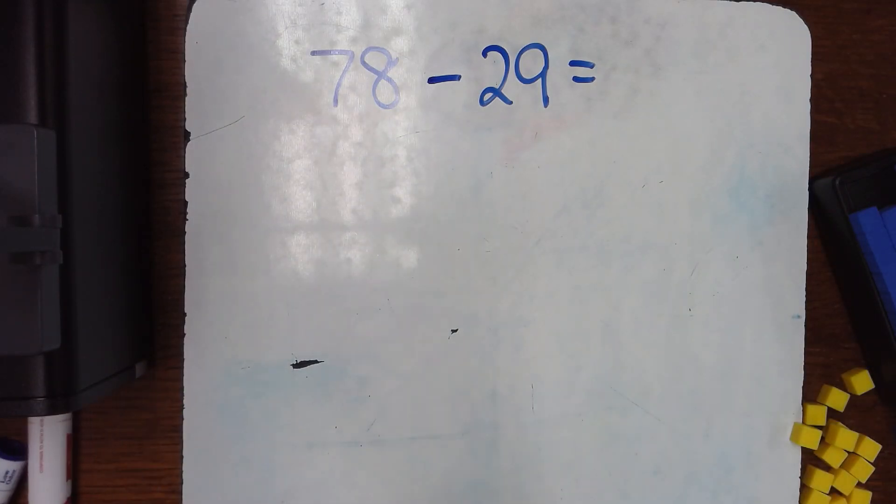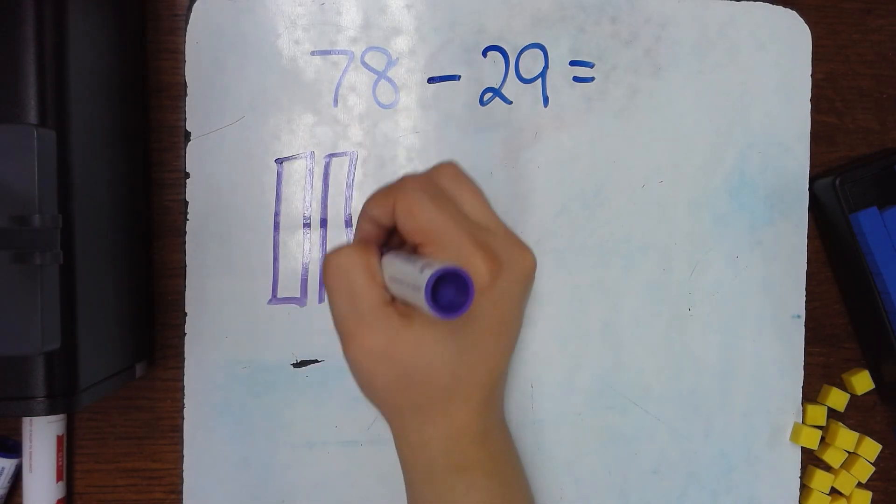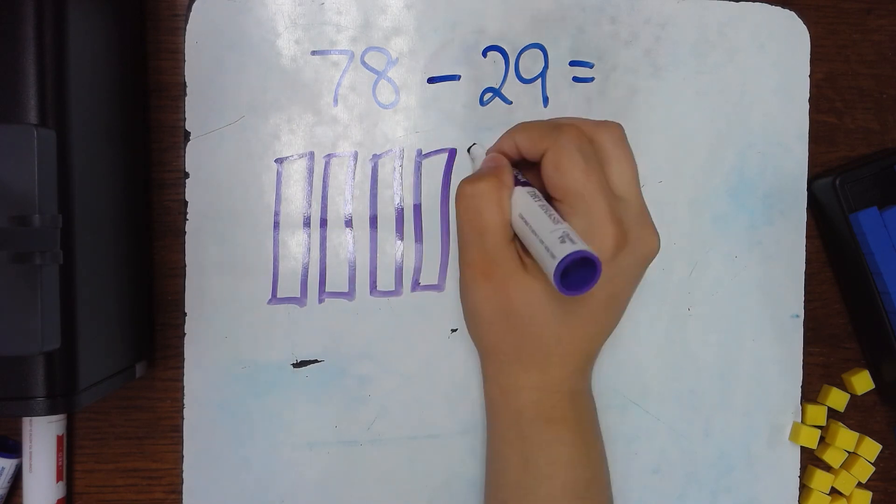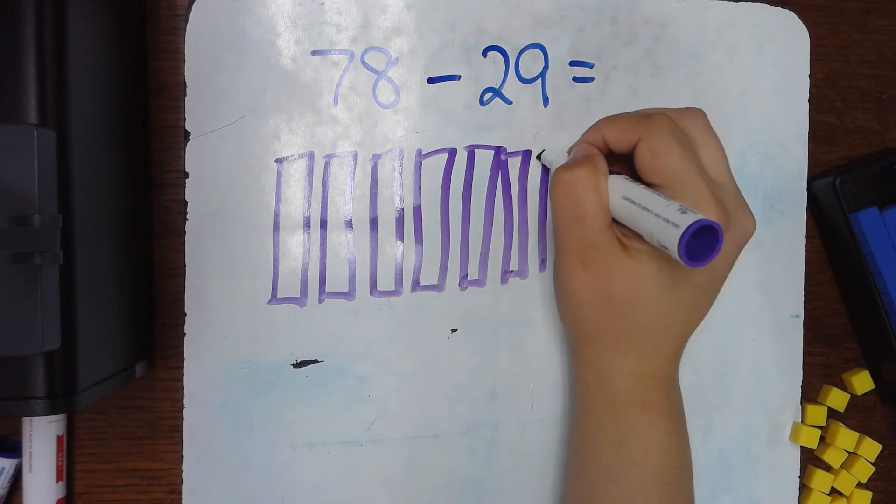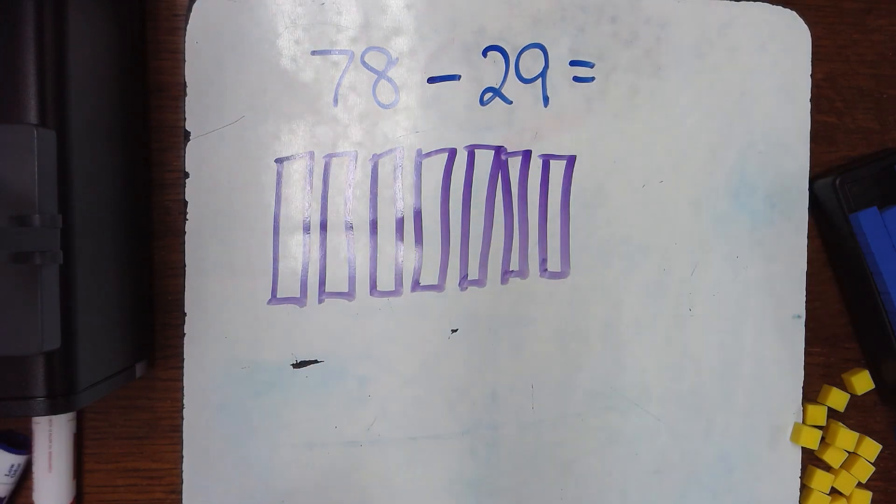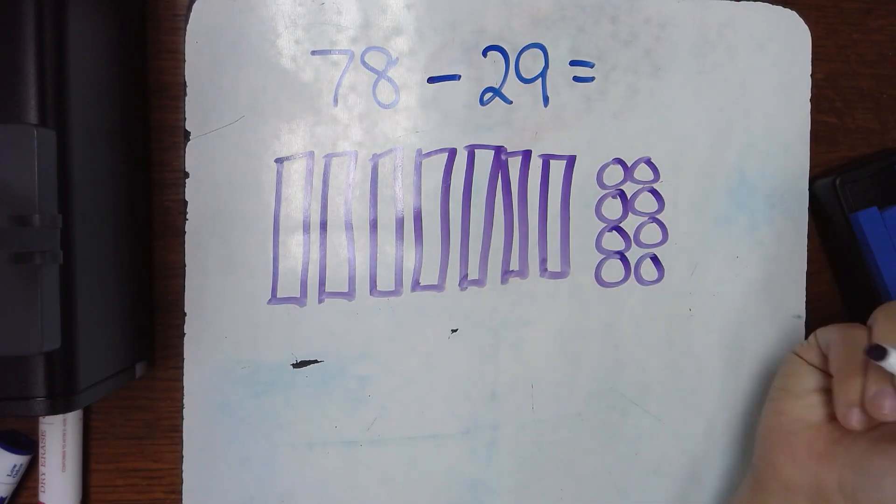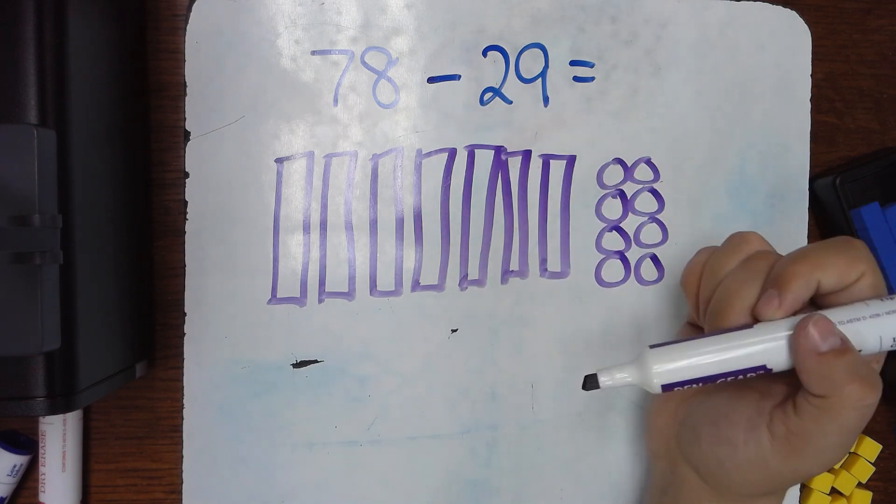So I'm going to draw 78 in purple by drawing blocks. This is the 10, 20, 30, 40, 50, 60, 70, and then I need 8 ones. 1, 2, 3, 4, 5, 6, 7, 8. All right, now this time instead of starting with the tens I'm going to start with the ones.